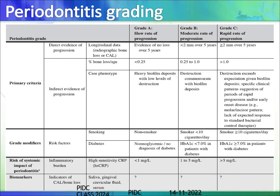Coming to grading: grading is based on indirect evidence of progression. If there are heavy biofilm deposits with low levels of destruction, it is a slow rate of progression — Grade A. Destruction commensurate with biofilm deposits is Grade B. If destruction exceeds expectations given by biofilm deposits, it is Grade C. Risk factors are also included: Grade A includes non-smokers with normal glycemia or no diabetes diagnosis; Grade B includes smoking less than 10 cigarettes per day and HbA1c less than 7%; Grade C includes smoking more than 10 cigarettes per day and HbA1c more than 7%. Other biomarkers and factors are still in the study phase.